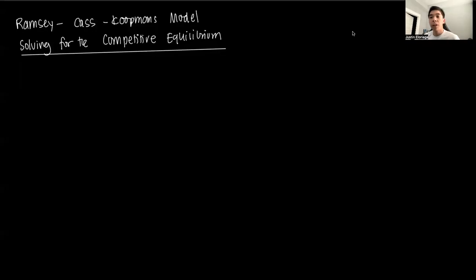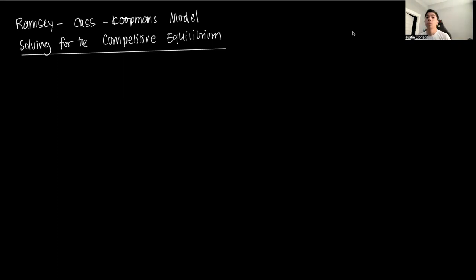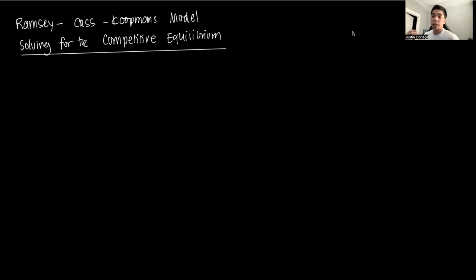Hi everyone and welcome to this video on the Ramsey-Cass-Koopmans growth model. We're picking up from where we left off in the last video, having defined an RCE, and now going into actually solving for the equilibrium allocations and the competitive equilibrium. The way we do that is we first start with the agent, then we go to the firm, and then we appeal to the steady state. We'll go through that in detail with the derivation step by step.